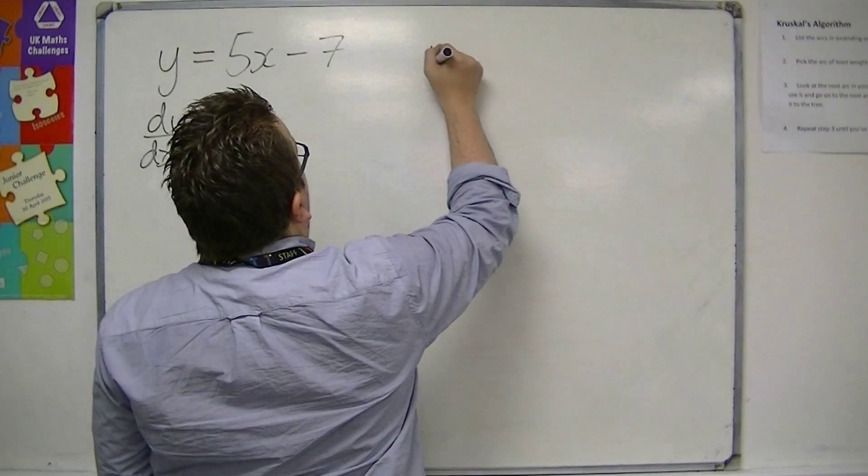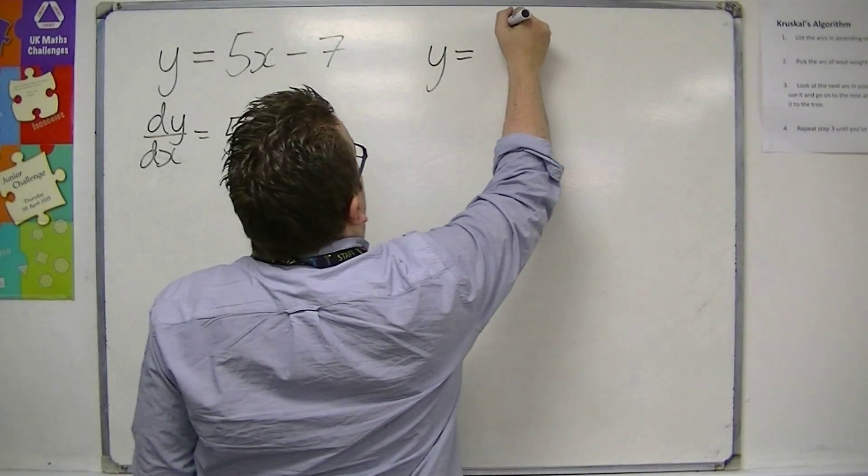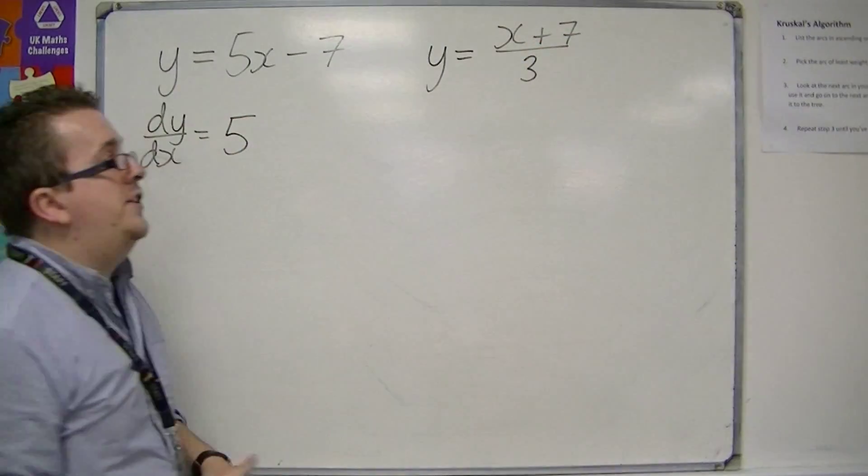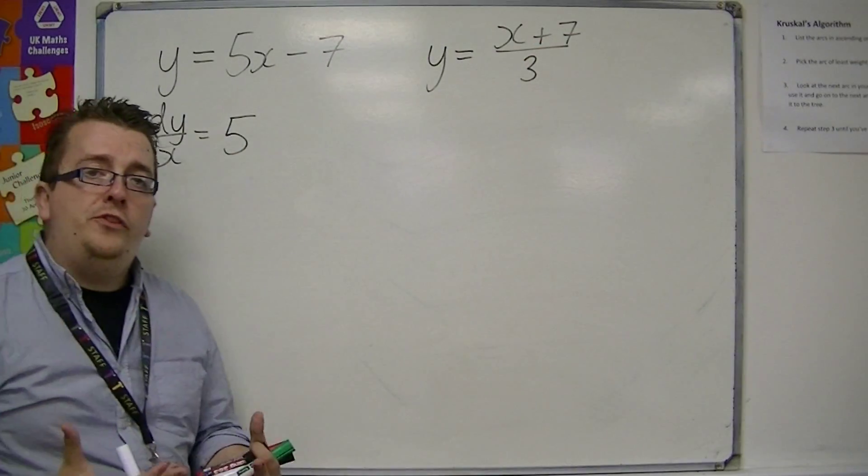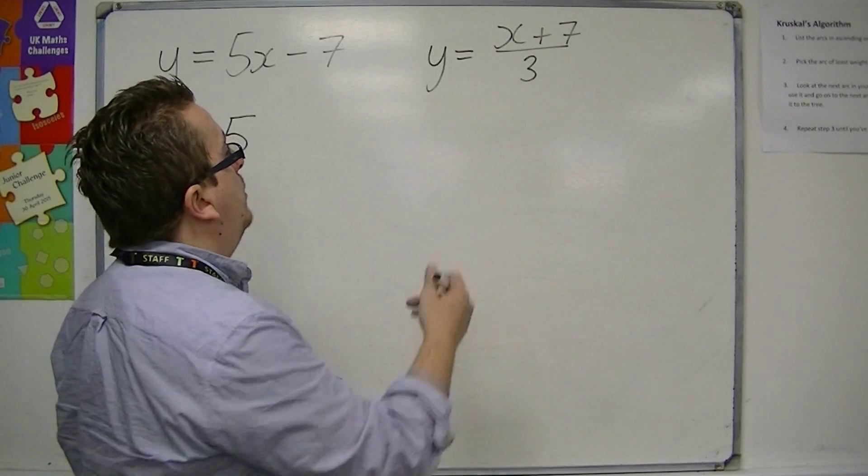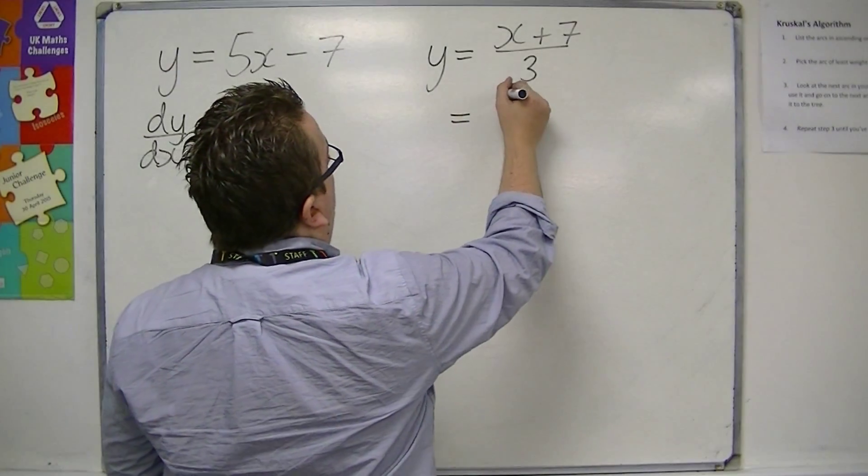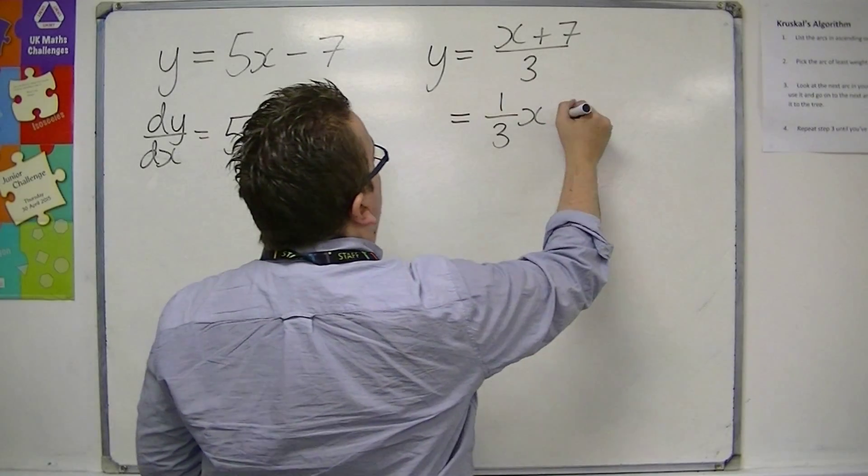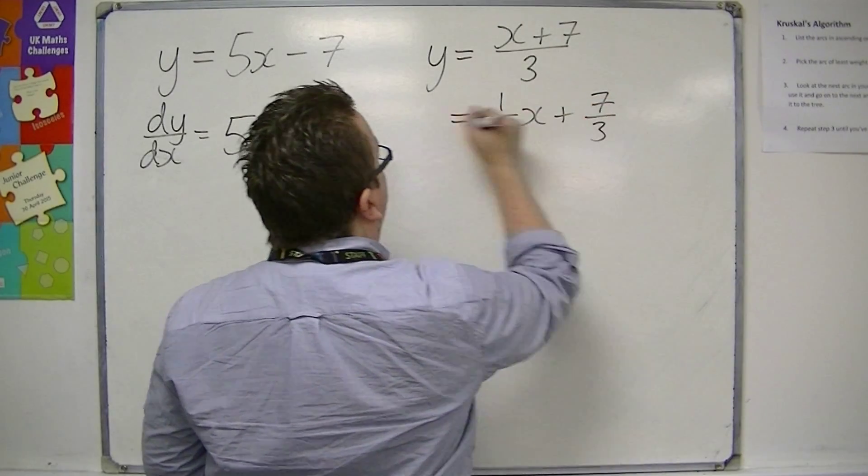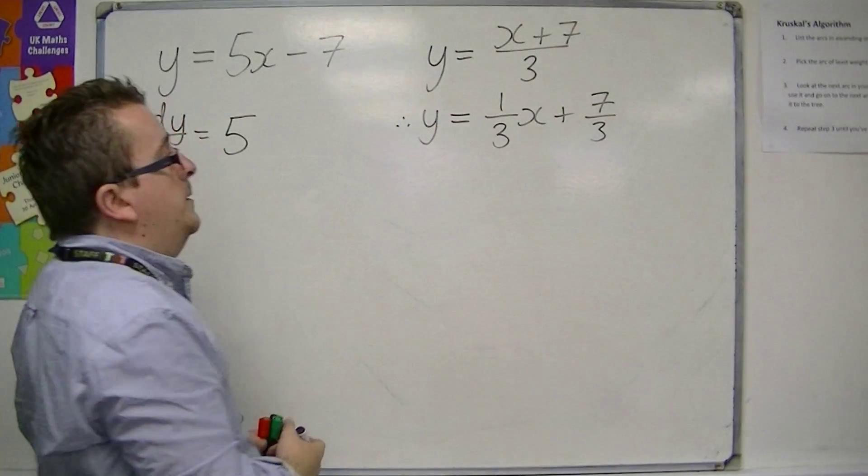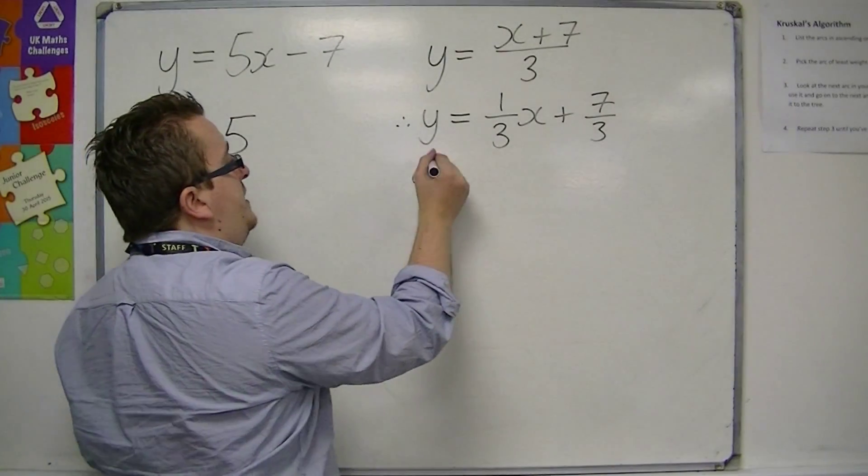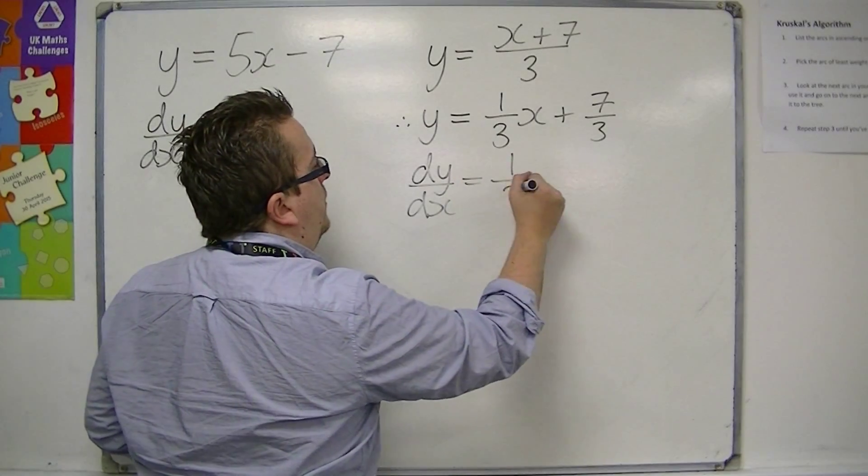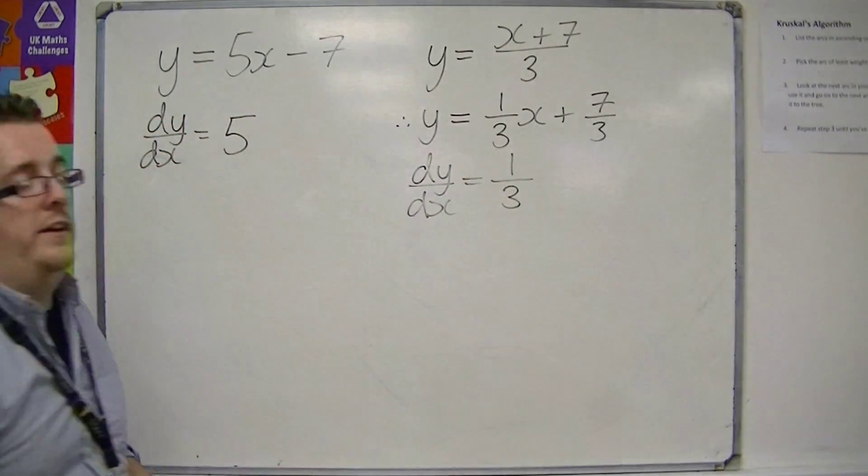If you were looking at a line like y is equal to x plus 7 over 3, this looks fairly odd in how it's been written. But remember, you can rewrite this as 1 over 3x, or x over 3, plus 7 thirds. So dy by dx is equal to 1 third. The gradient of this line is 1 third.